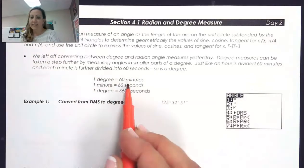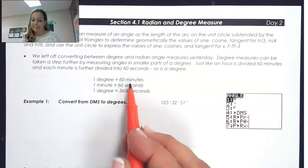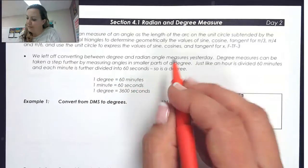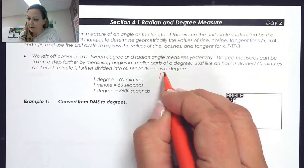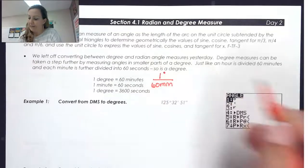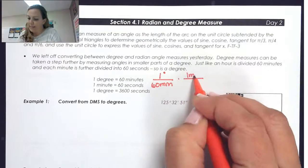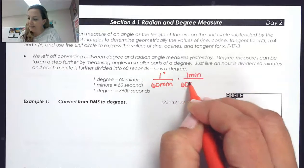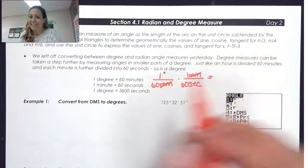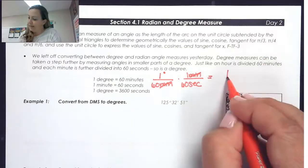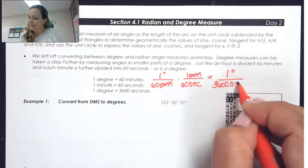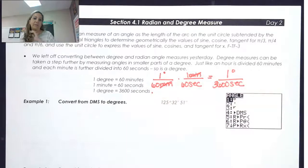One degree is the same as 60 minutes, and one minute is the same as 60 seconds. Using those as conversion factors, we can see that if we want to know how many seconds are in one degree, we get one degree over 3,600 seconds — and that's how we end up with that conversion factor.